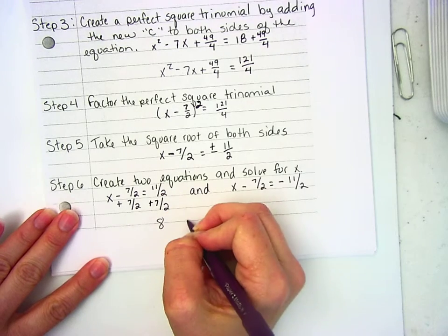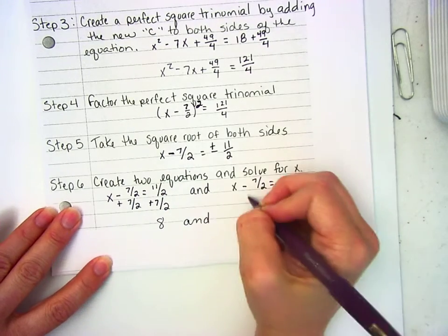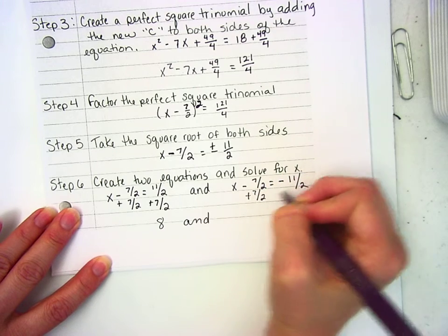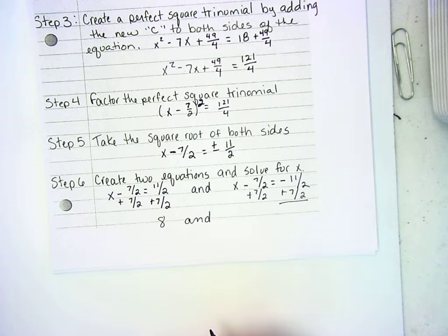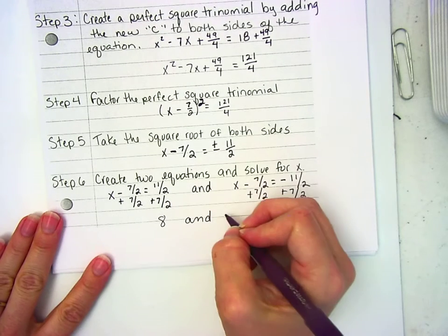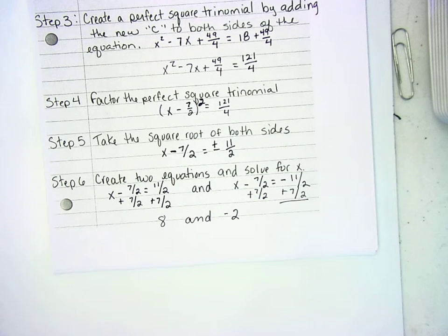So I have 8 and plus 7/2 on both sides. Whenever I simplify this, I get -4/2, which simplifies to -2. Good.